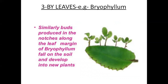The next one is reproduction by leaves. Some plants like bryophyllum grow from their leaves. A bryophyllum leaf has notches, as you can see in this picture. Notches are buds that germinate into new plants. So one leaf of a bryophyllum plant gives rise to many new plants if it gets soil and moisture.